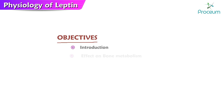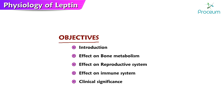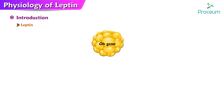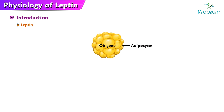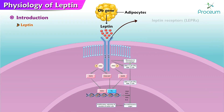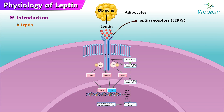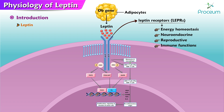Physiology of leptin. Leptin is a product of the obese gene which is expressed primarily in adipocytes. Leptin acts on leptin receptors which are widely distributed and account for its pleiotropic effects on energy homeostasis and neuroendocrine, reproductive, and immune function.